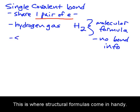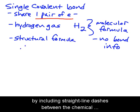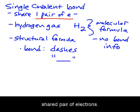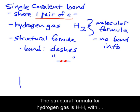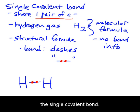This is where structural formulas come in handy. In a structural formula, we can represent covalent bonds by including straight-line dashes between the chemical symbols for the atoms. Each dash represents one shared pair of electrons. The structural formula for hydrogen gas is H—H, with one dash between the hydrogen atoms representing the single covalent bond.